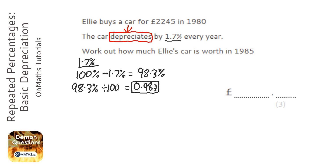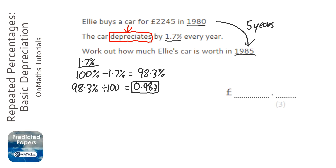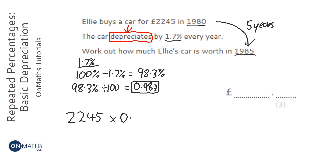Multiplying by 0.983 will decrease a value by 1.7%. We've got a car bought in 1980 — what is it worth in 1985? That's five years, so it's going to depreciate by 1.7% every year. We've got £2245 and we times it by 0.983 for each year.